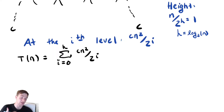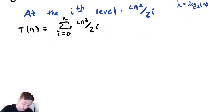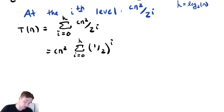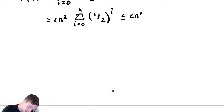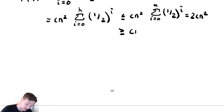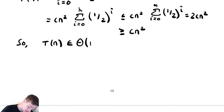We add up the cost from the zeroth level all the way up until the last level, and that gives us our total runtime. This is a decreasing geometric series — maybe it'll be easier to see once we factor out cn squared, giving us the sum from i equals 0 to h of 1 over 2 to the i. It is less than or equal to cn squared times the sum from i equals 0 to infinity of (1/2) to the i, which adds up to 2. So this is 2cn squared, and bounded below it's greater than or equal to cn squared. Therefore T(n) is in Θ(n²).